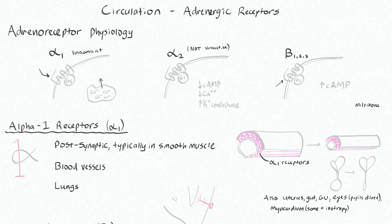How this works is that usually your cyclic AMP is broken down into AMP by phosphodiesterase, but milrinone blocks your phosphodiesterase. Therefore, this doesn't happen, and you have increased amounts of intracellular cyclic AMP. So you can see some of these beta-1 and beta-2 effects without actually affecting this receptor.